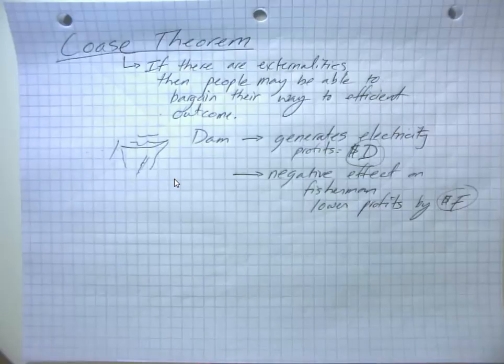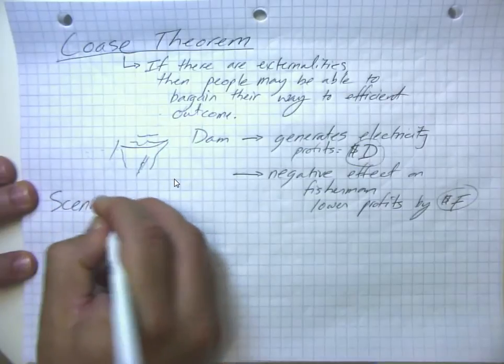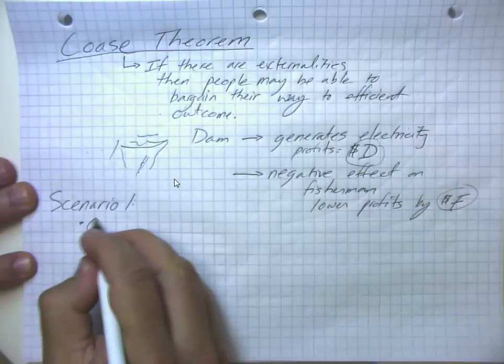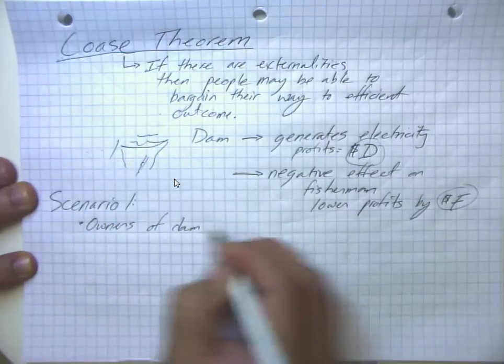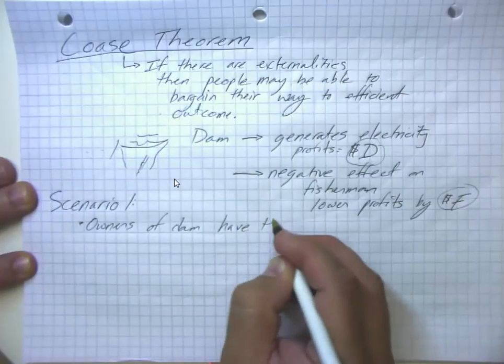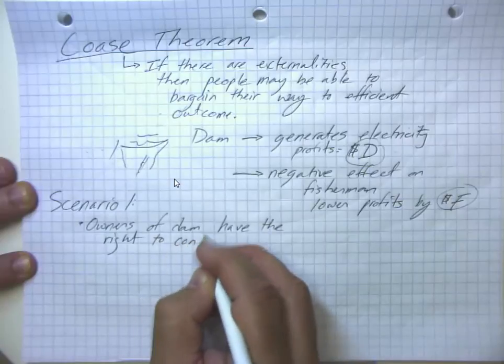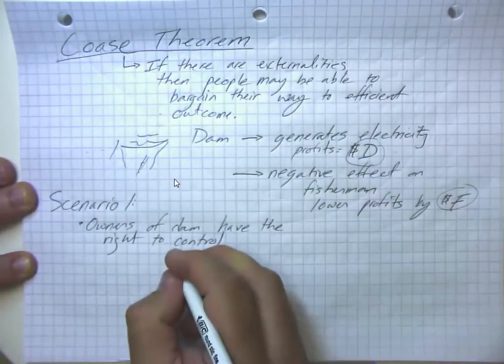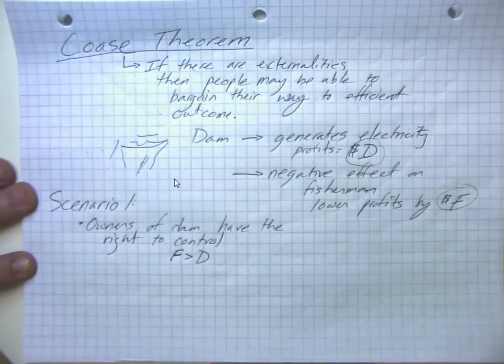So let's go ahead and think about some different scenarios. What I'm going to call scenario one is going to be the owners of the dam have the right to control whether it exists or not. And I'm also going to assume that in this case the value of the fish is greater than the value of the dam.